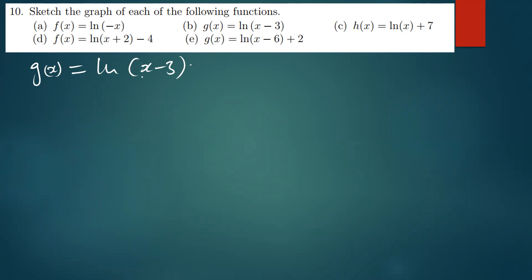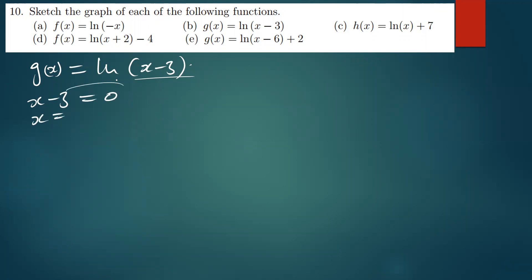To find the vertical asymptote, equate what's in the brackets to zero: x minus 3 equals zero, so x equals 3. This is our vertical asymptote.